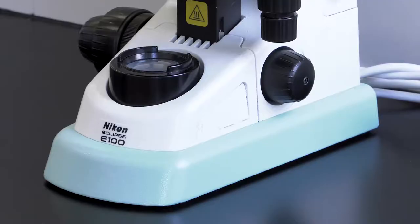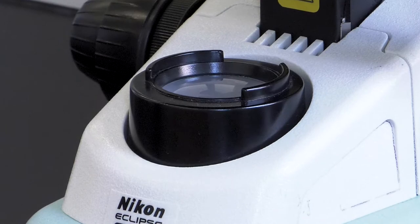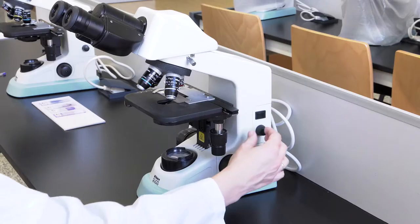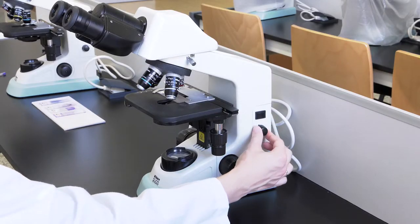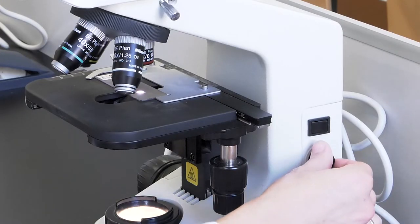Let's look at the base again. On it, there is an element of great importance, the light source. It contains a lamp which emits white light. When you turn the power switch on and adjust its intensity, the light will be projected upwards, penetrating the condenser lens.